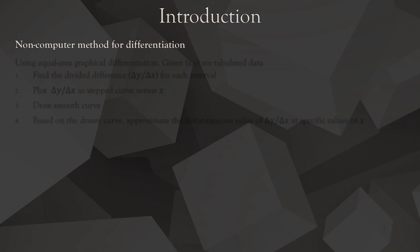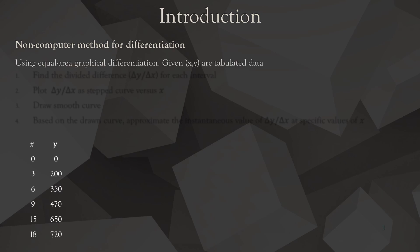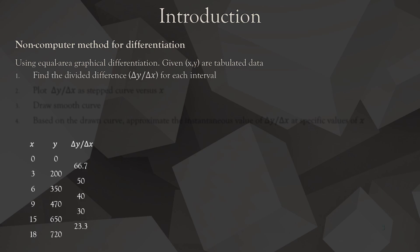Before we go to numerical differentiation, let's take a look at the non-computer method: equal area graphical differentiation. Say we have x and y data with six data points. We start by finding the divided difference delta y over delta x for each interval, connecting a straight line between each pair of points and calculating the slope. For example, the straight line connecting the data at x equals zero and x equals three has a gradient of 66.7.